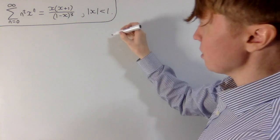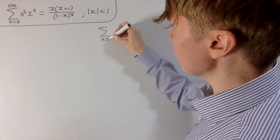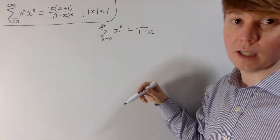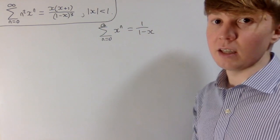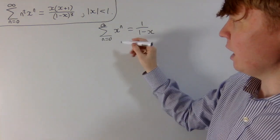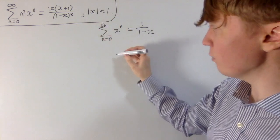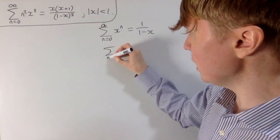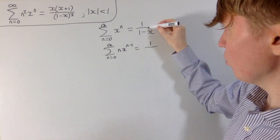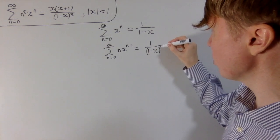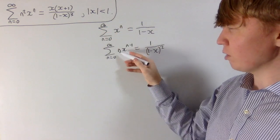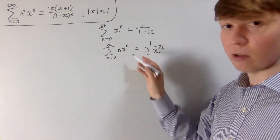Let's start evaluating this series. A good starting point is that the sum from n=0 to infinity of xⁿ equals 1/(1-x) when |x| < 1, because this is the sum of a geometric series. Next, we'll differentiate both sides — this is fine within the radius of convergence, and we can differentiate term by term — giving the sum of n·x^(n-1) on the left and 1/(1-x)² on the right. The zeroth term, where we'd have 0·0^(-1), is just taken to be 0.